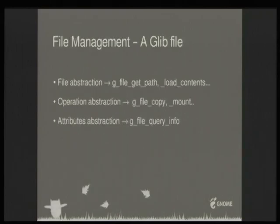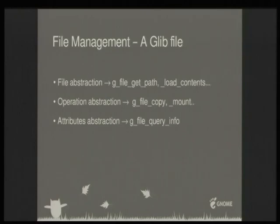File management: GLib provides GFile, an abstraction layer over kernel file descriptors. It provides the path for the file and lets you load contents, but a GFile is not the actual file — it's just a path, an abstraction. It also provides abstractions for operations like copy and move, so you just supply the path and that's it. Very convenient for Nautilus.